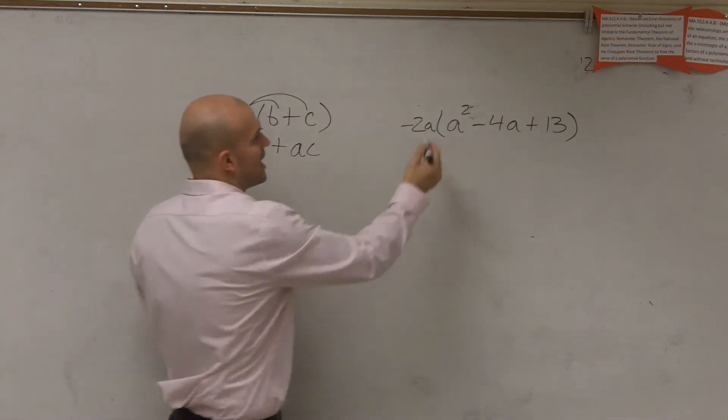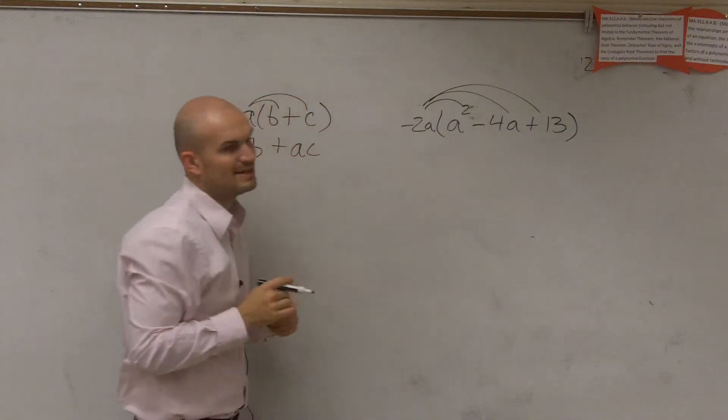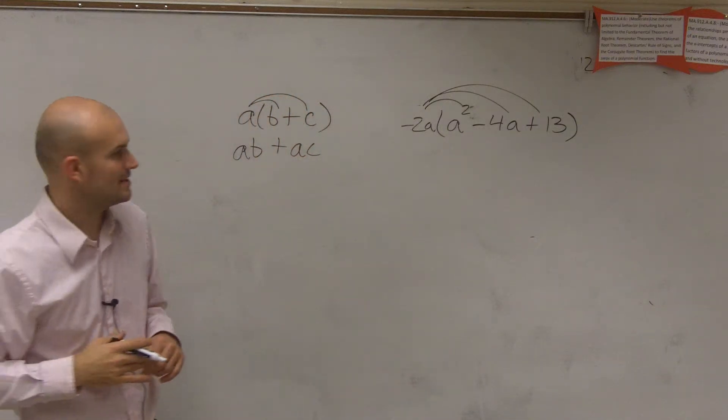So to simplify this problem, all I need to do is multiply negative 2A times every single one of my terms.